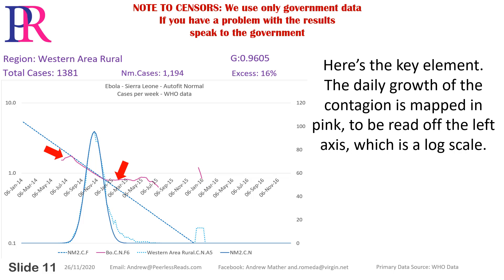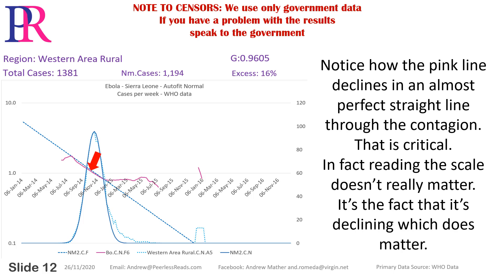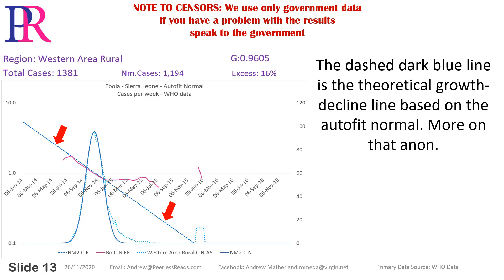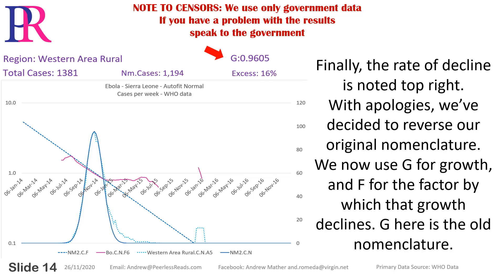Here's the key element. The daily growth of the contagion is mapped in pink, to be read off the left axis, which is a log scale. Notice how the pink line declines in an almost perfect straight line through the contagion — that is critical. The dashed dark blue line is the theoretical growth decline line based on the autofit normal. Finally, the rate of decline is noted top right. We've decided to reverse our original nomenclature: we now use G for growth and F for the factor by which that growth declines.